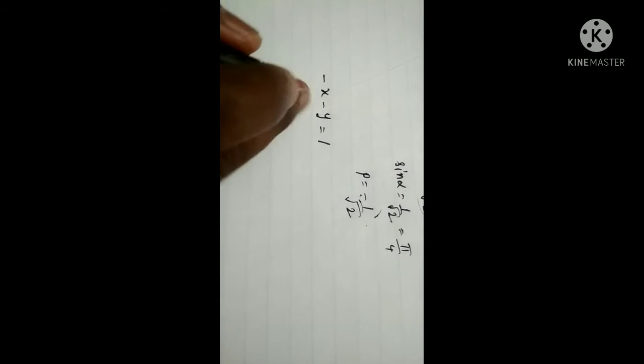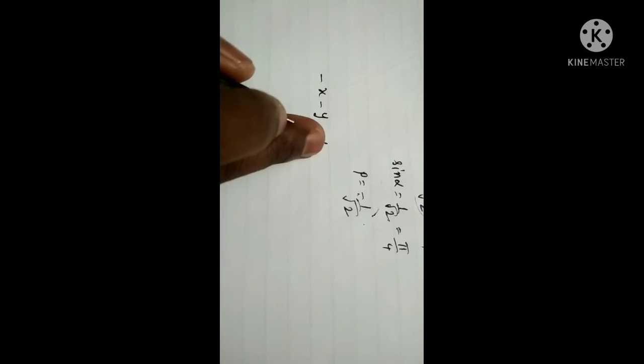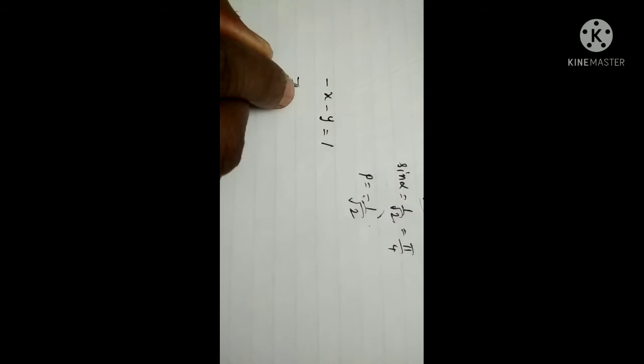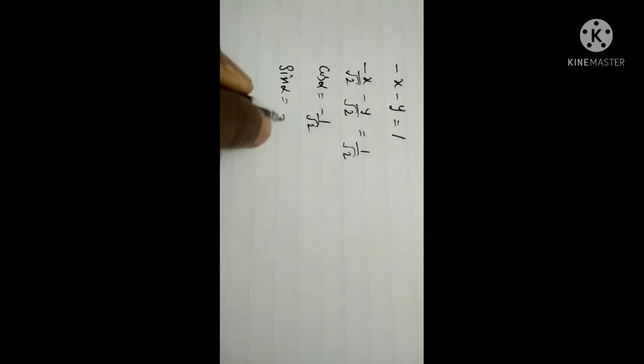So minus x minus y equal to 1. Looking at this equation of a straight line, dividing by √2: minus x by √2 minus y by √2 equal to 1 by √2. So cos α equals minus 1 by √2, sin α equals minus 1 by √2, and p equals 1 by √2.